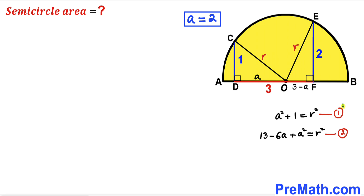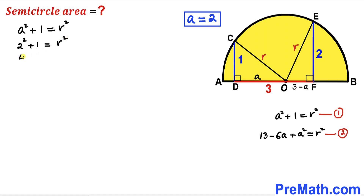Returning to equation one and substituting a = 2, we get 2² + 1 = r², which gives 4 + 1 = r², so r² = 5.